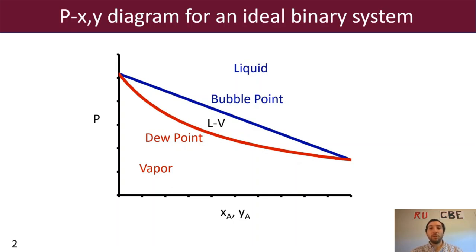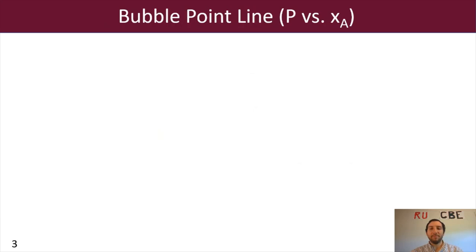So we're going to first start off with our bubble point line, and that's where we're going to have our pressure versus our molar composition in the liquid phase. And as a reminder, with our Raoult's and Dalton's law combination of equations, we know that the partial pressure of component A is going to equal the molar composition of A in the vapor phase times the total pressure.